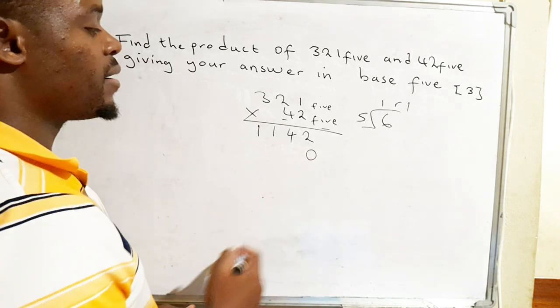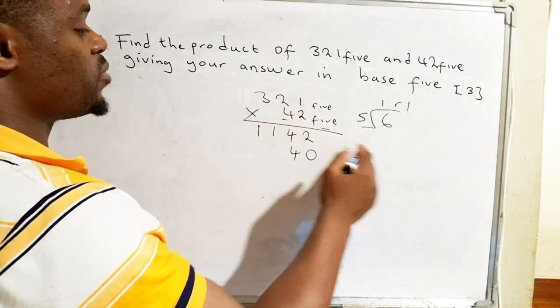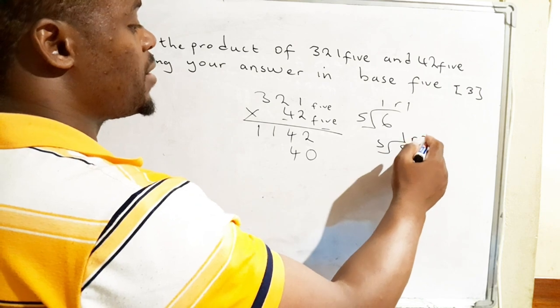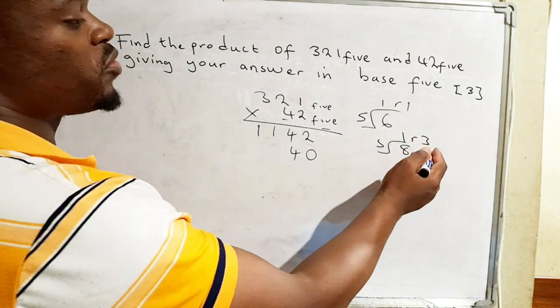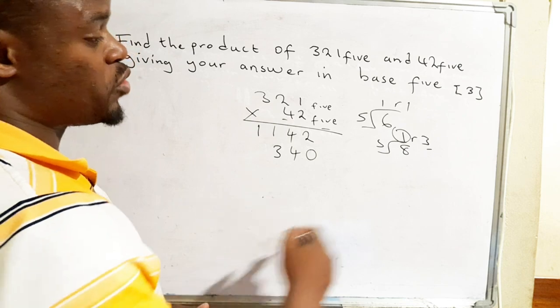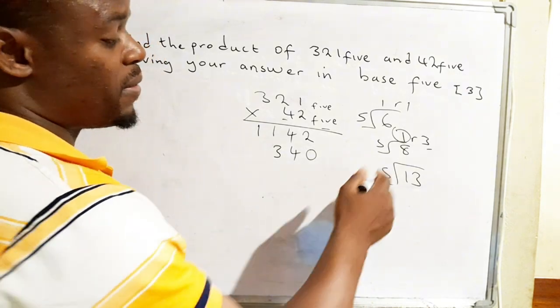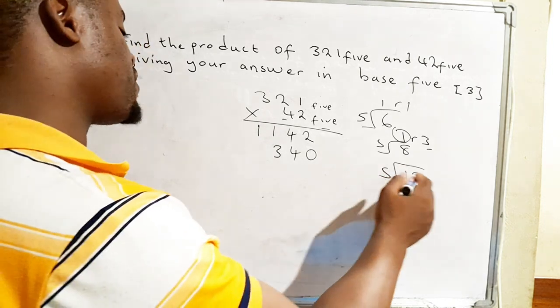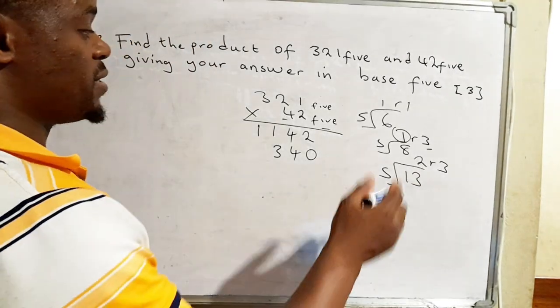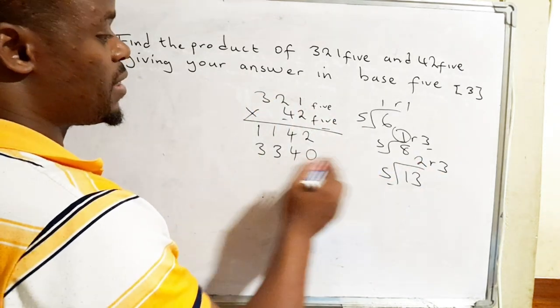We can now move on to this one. We are going to write a 0 here for place value set. Then we multiply 4 times 1, that's 4. 4 times 2, that's 8. We divide 5 into 8, that's 1 remainder 3. So what we are going to write is the remainder, and then we remember 1. 4 times 3, that's 12 plus 1, that's 13. 13 is greater than the base we are dealing with, so we have to divide the base into the answer. So 5 into 13, that is 2 remainder 3. So we start with the 3, then we write the 2.